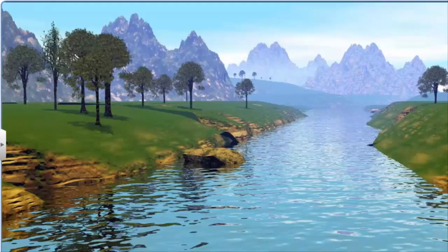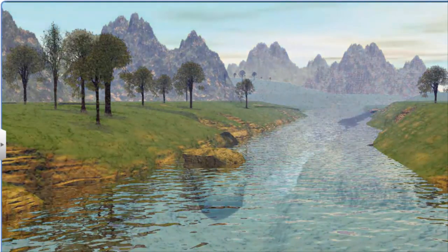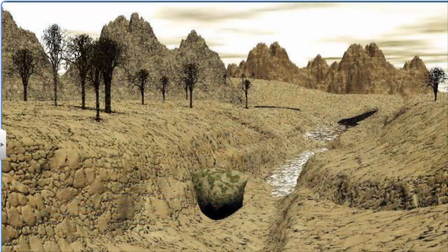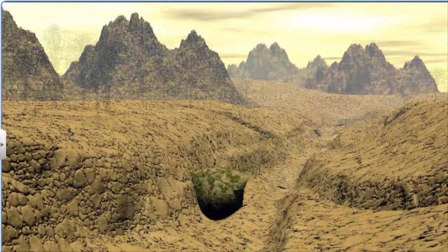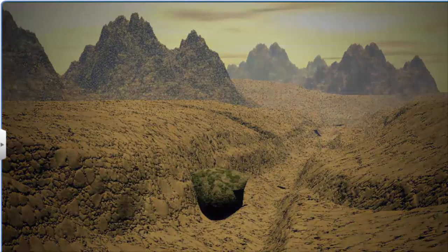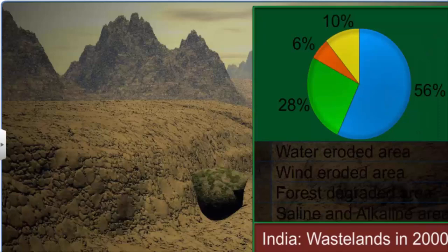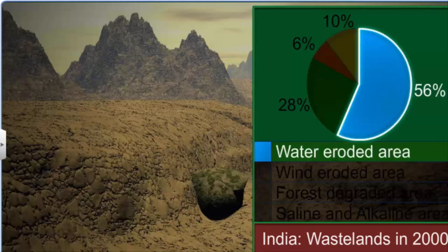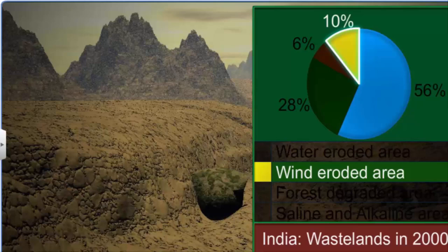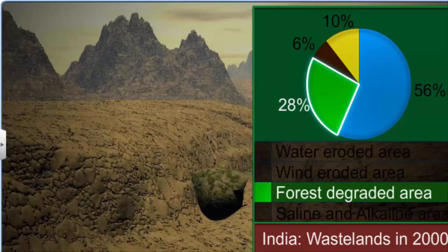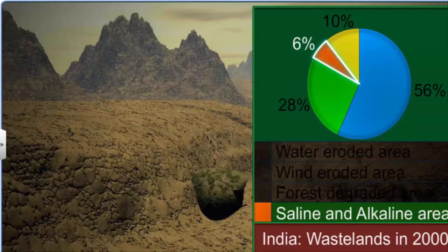Continuous and indiscriminate use of land resources without taking appropriate measures results in conversion of cultivable land into barren wasteland. This is called land degradation. India has about 130 million hectares of degraded land, roughly equal to one-third of the total area of the country. Of this, 56% is water-eroded area, 10% is wind-eroded, 28% is forest-degraded area, and 6% has saline and alkaline deposits.